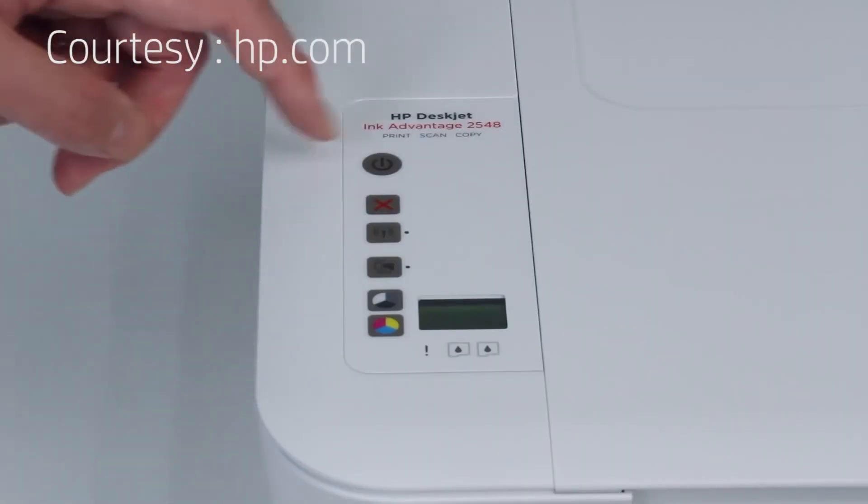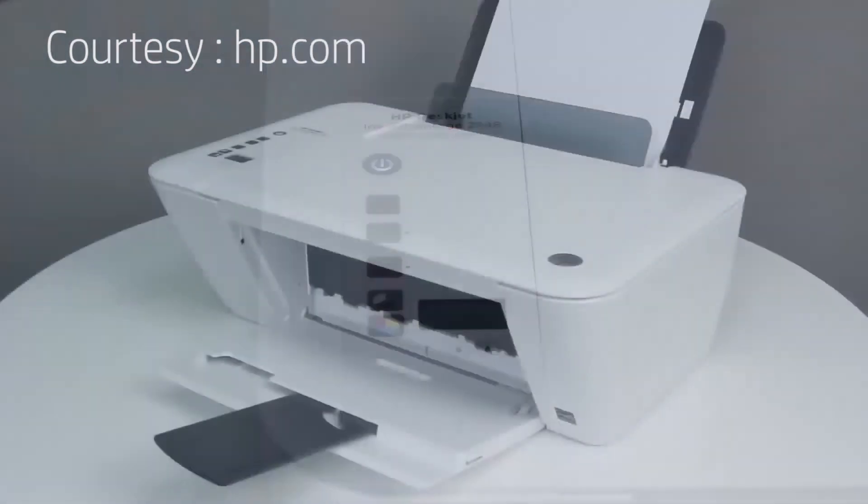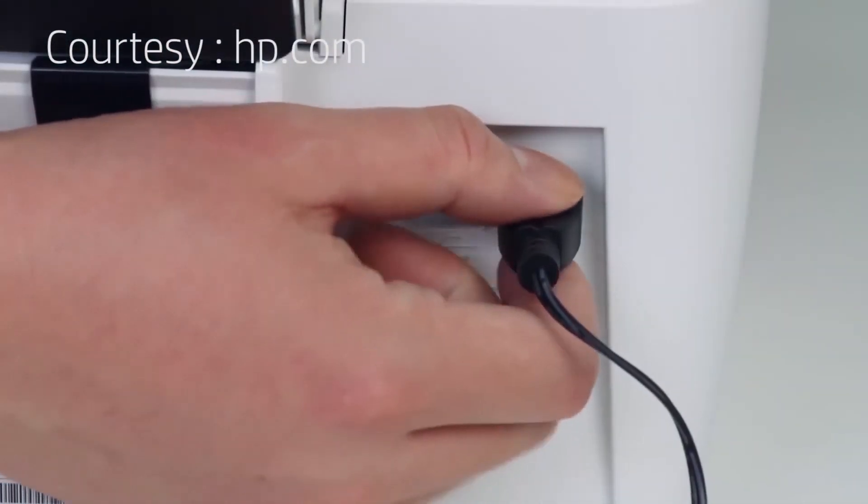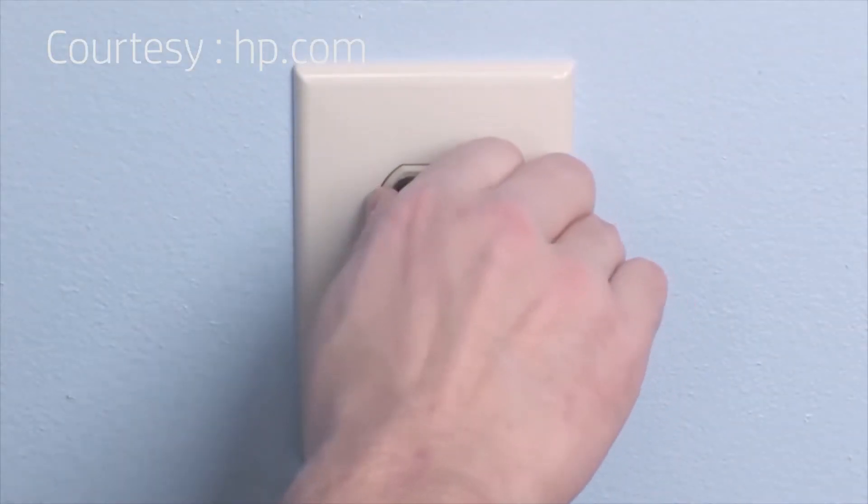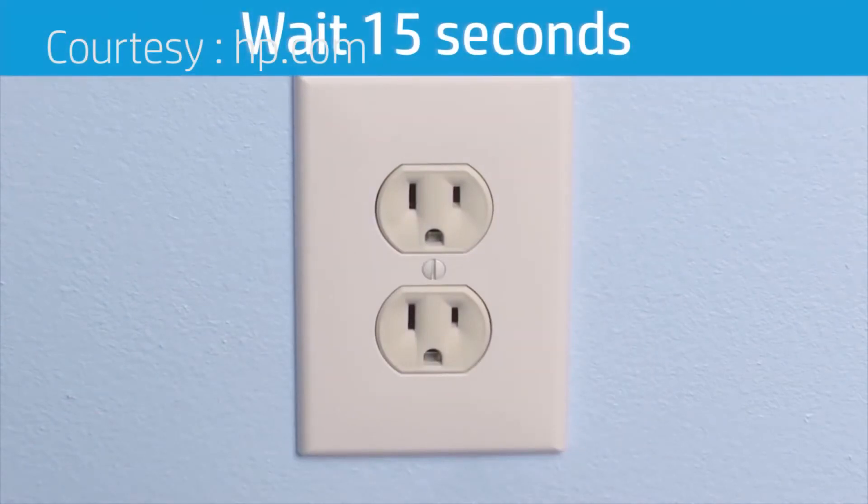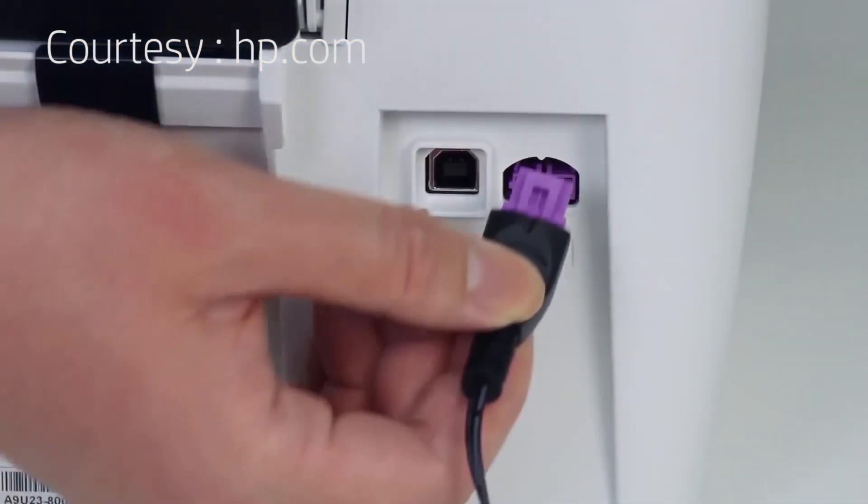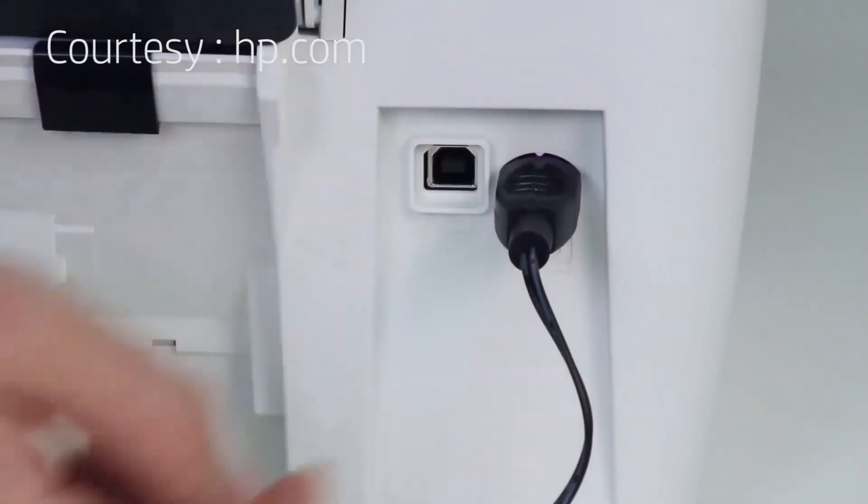While the printer is on, disconnect the power cord from the back of the printer. Unplug the power cord from the wall outlet. Wait at least 15 seconds. Plug the power cord back into the wall outlet. Reconnect the power cord to the printer, then press the power button to turn on the printer.